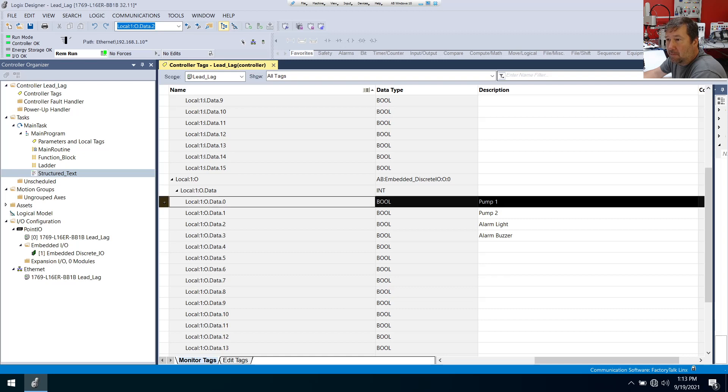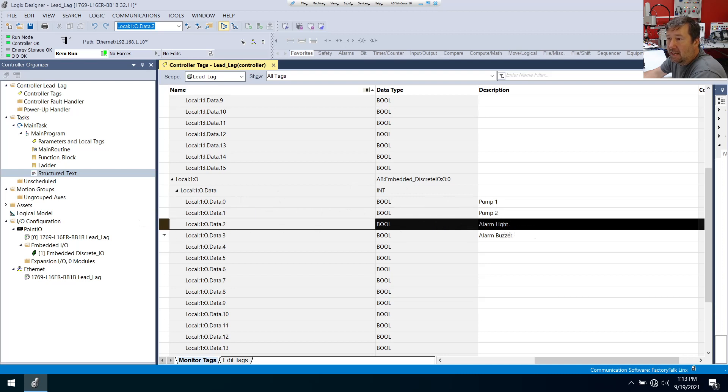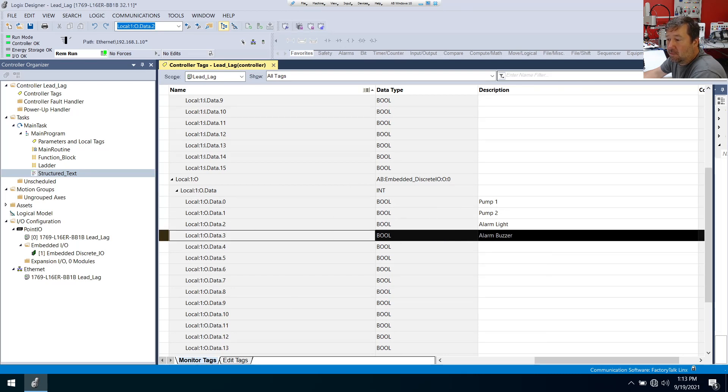And then for my outputs, output 0 is pump 1. Output 1 is pump 2. Output 2 is going to be an alarm light. And output 3 is going to be an alarm buzzer.